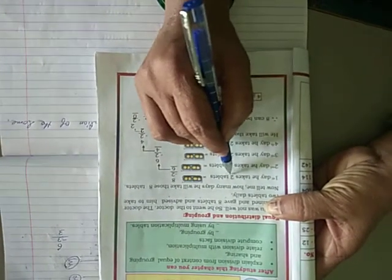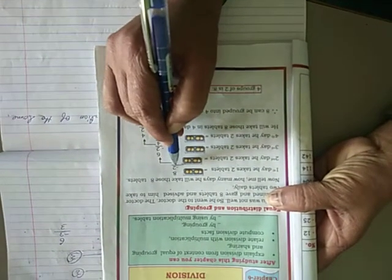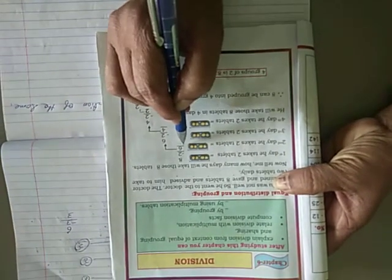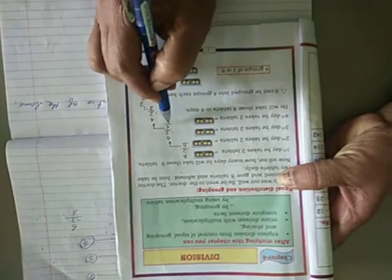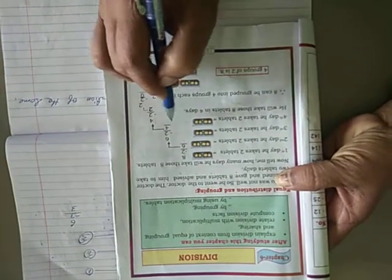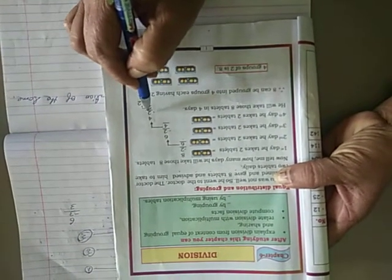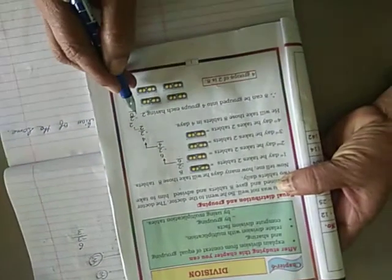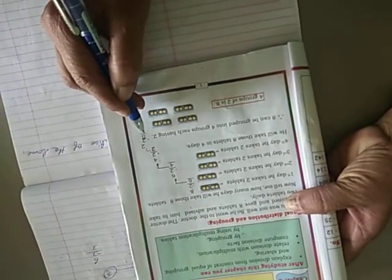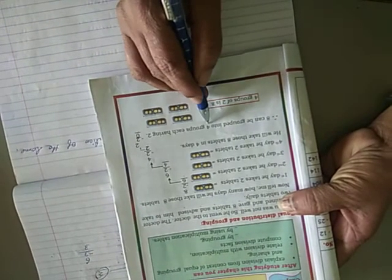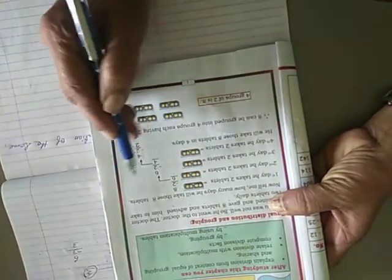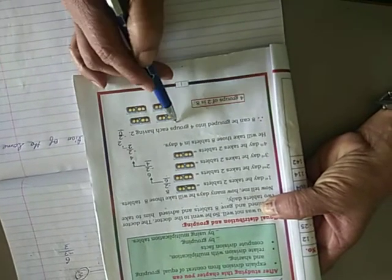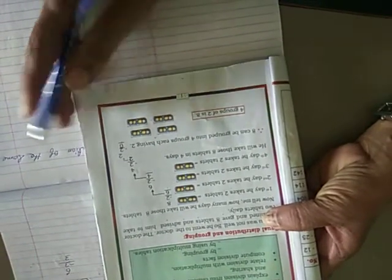First day he takes 2 tablets. From 8 tablets, minus 2 is 6. Second day he took 2 tablets, 6 minus 2 is 4. Third day he took the tablets, 4 minus 2 is 2. On the fourth day, he took another 2 tablets, that is 0. So 8 can be grouped into how many groups? 1, 2, 3, 4 groups, each having 2.